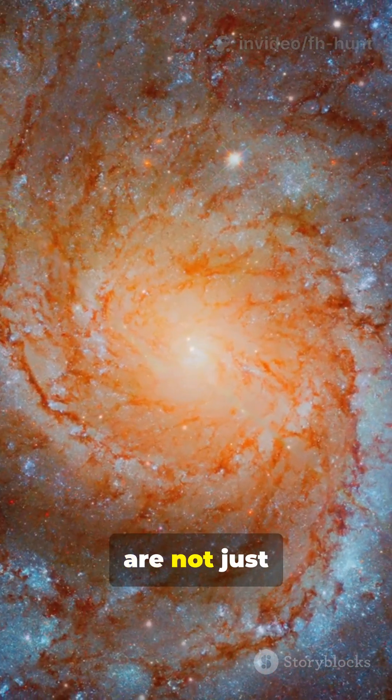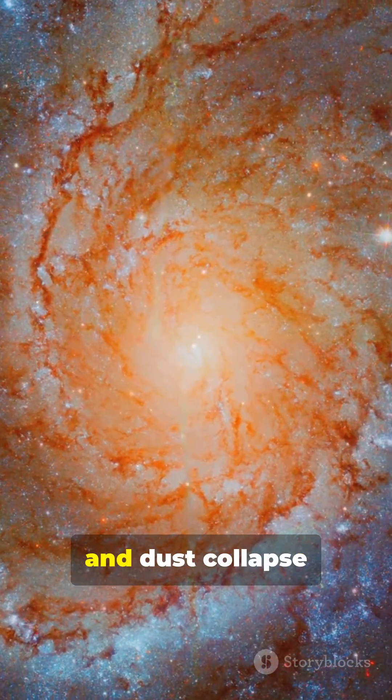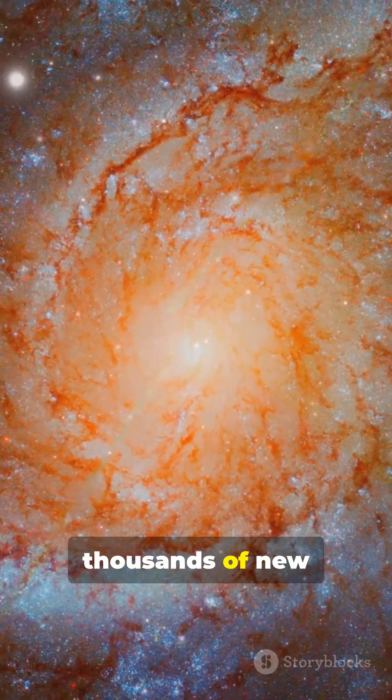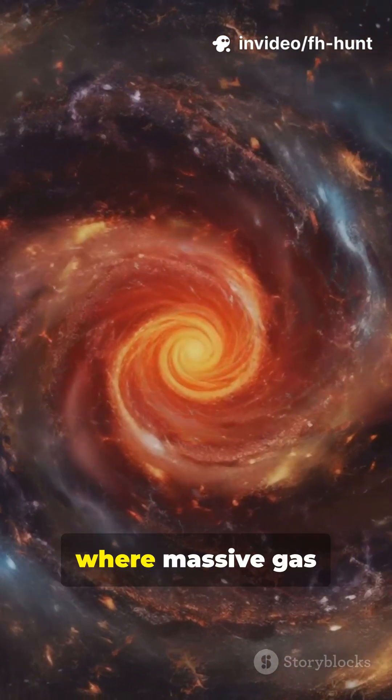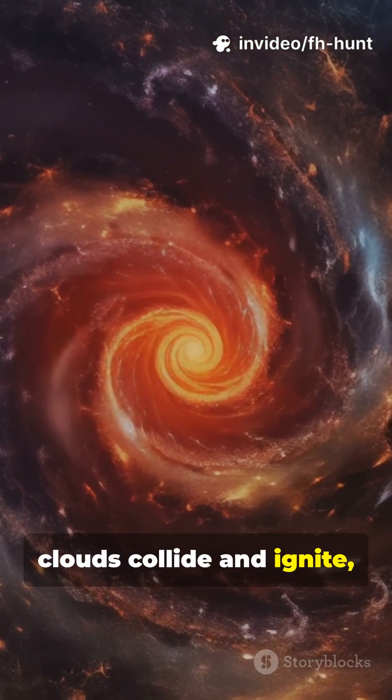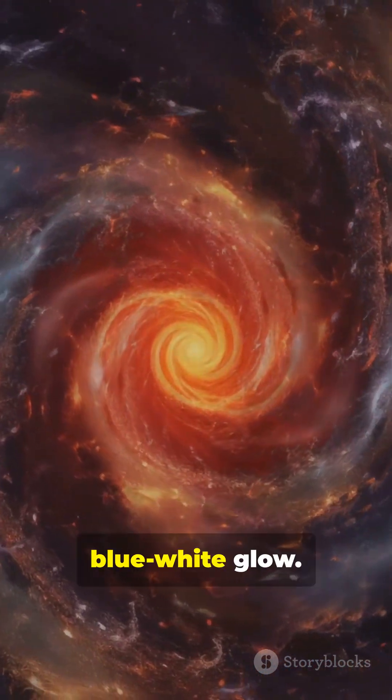Its spiral arms are not just beautiful, they're bustling nurseries where clouds of gas and dust collapse under gravity to form thousands of new stars every year. Imagine a cosmic traffic jam, where massive gas clouds collide and ignite, giving birth to clusters of hot young stars that shine with a blue-white glow.